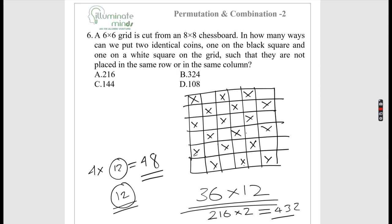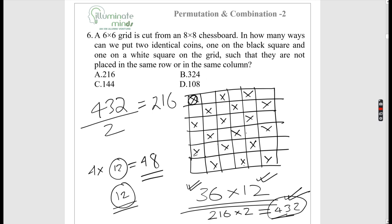Two identical coins — one on a black square, one on a white square — are placed on a grid such that they are not in the same row or same column. The first coin can be placed in 36 positions, and for each placement there are 12 valid positions for the second coin. So 36 × 12 = 432, but since we have double-counted, divide by 2 = 216. The answer is option A.